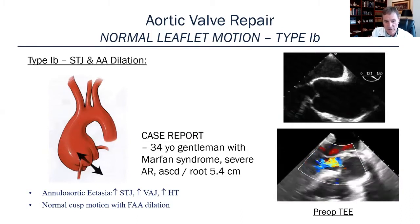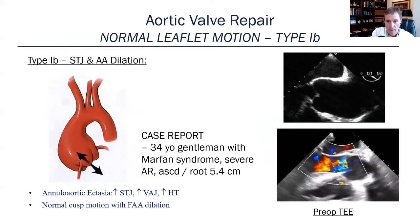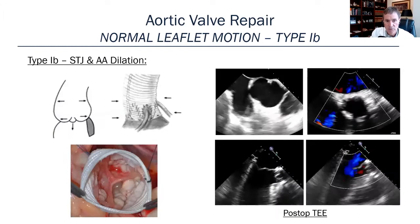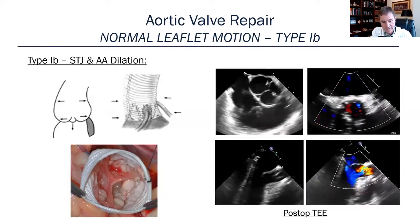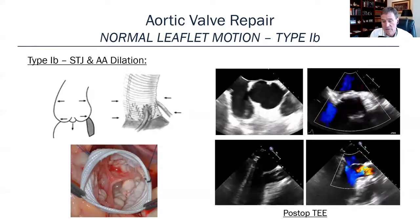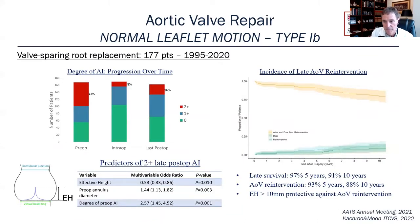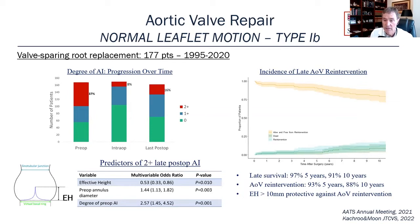Here's a type 1B — what we see with Marfan syndrome or annuloaortic ectasia. There's normal cusp motion, but the leaflets are pulled apart at both levels, generally yielding a central jet of severe regurgitation. In this patient, we did a valve-sparing aortic replacement, re-implanting the valve inside the tube and preserving the leaflets. We've been doing this since Tyrone David first presented it in 1993 with excellent long-term results. In my series of 177 patients at WashU, what predicted recurrence over time was effective height — the distance from the top of coaptation down to the annulus. Effective height greater than 10 to 11 millimeters was protective against aortic valve re-intervention.